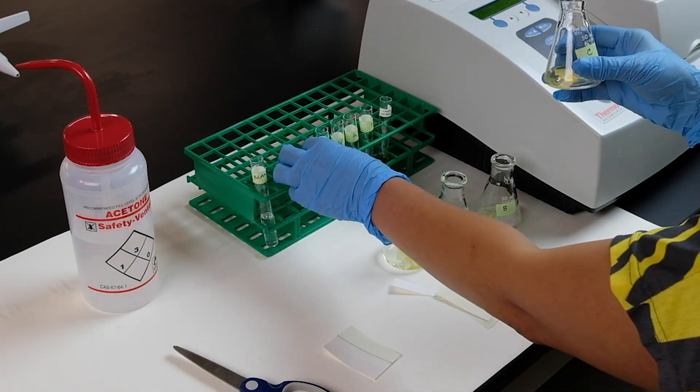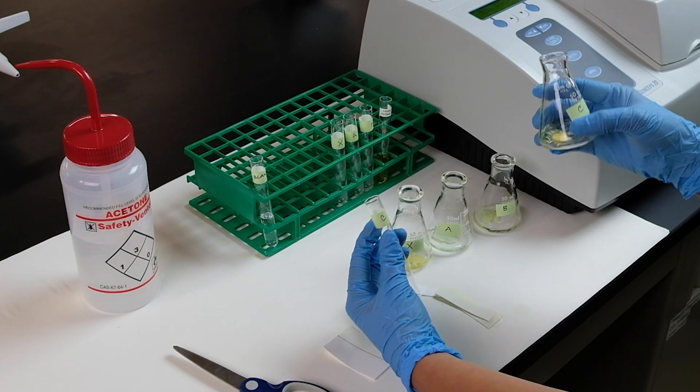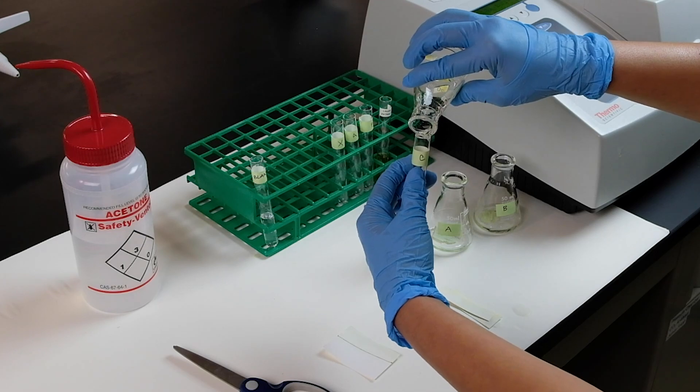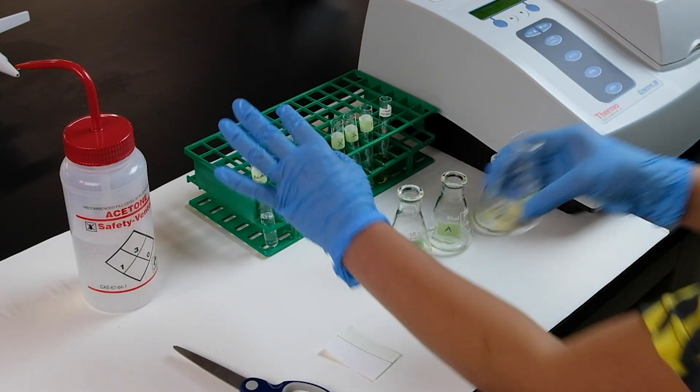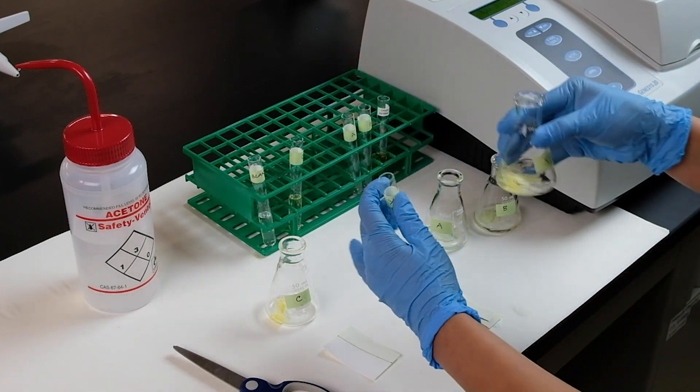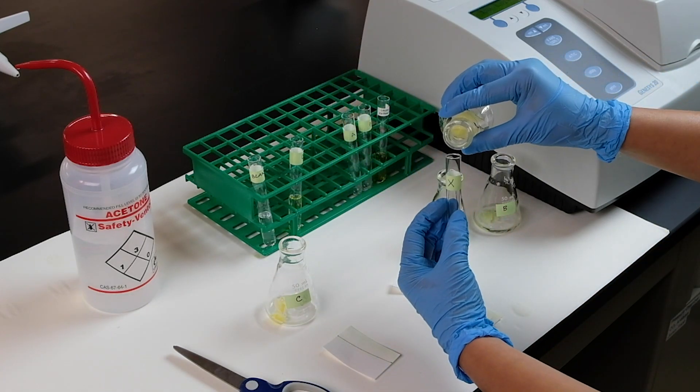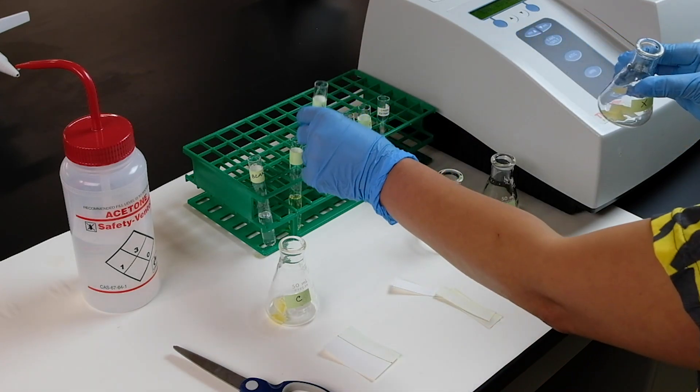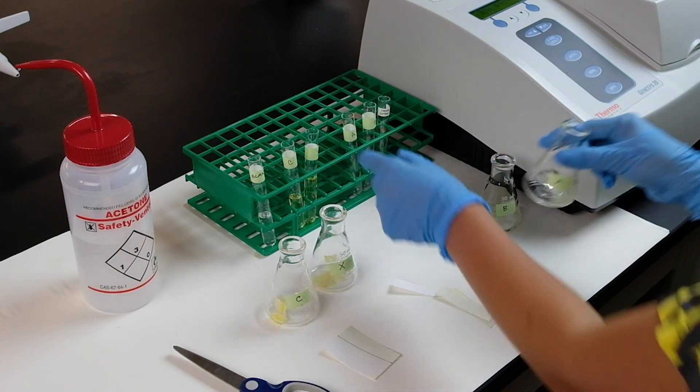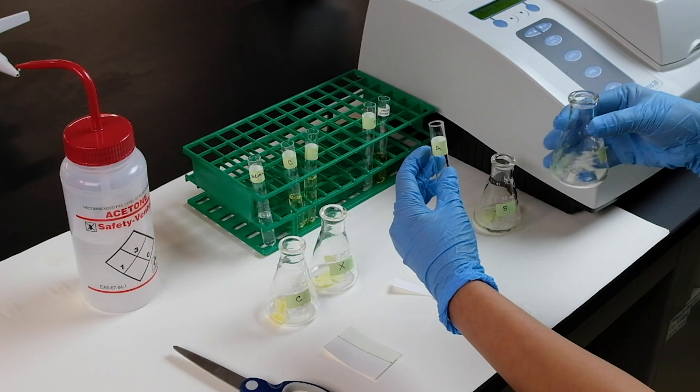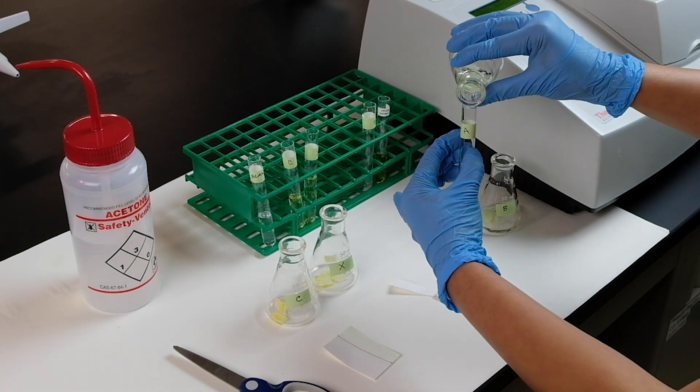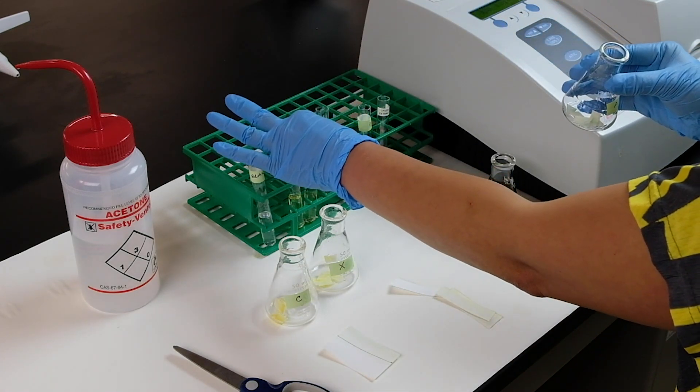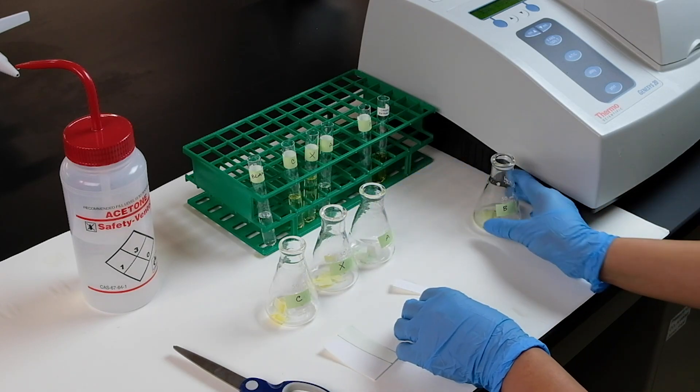Pour each pigment into the corresponding test tube: carotene to carotene, xanthophyll to xanthophyll, chlorophyll A, and chlorophyll B.